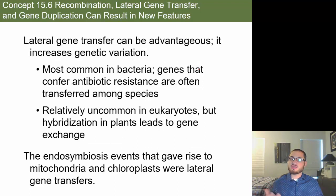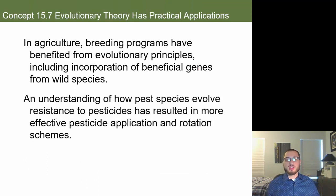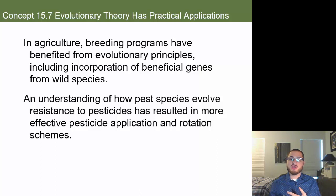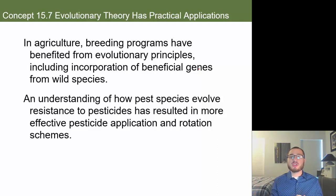Lateral gene transfer can be advantageous as it increases variation. It's common in bacteria and relatively uncommon in eukaryotes, which is why eukaryotes reproduce sexually. Species may also pick up DNA fragments directly from the environment, genes may be transferred via viral genomes, and hybridization can result in the transfer of many genes. In agriculture, breeding programs have benefited from evolutionary principles, including incorporation of beneficial genes from wild species into crops.